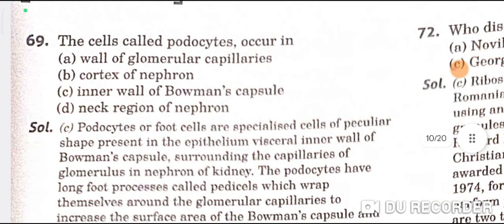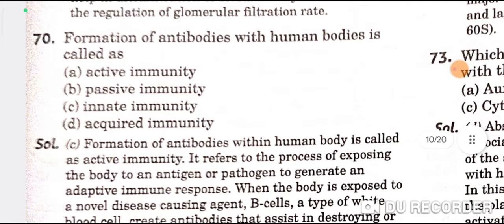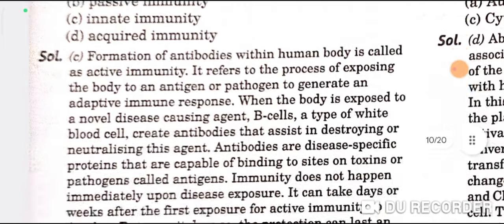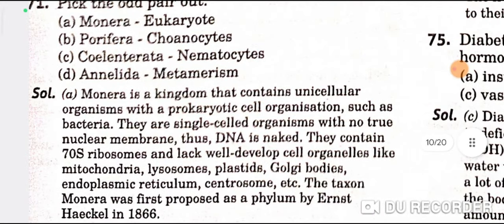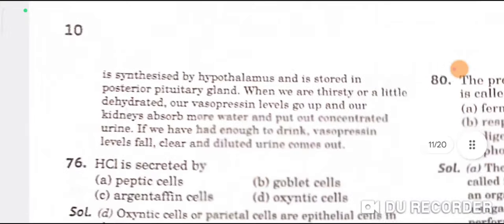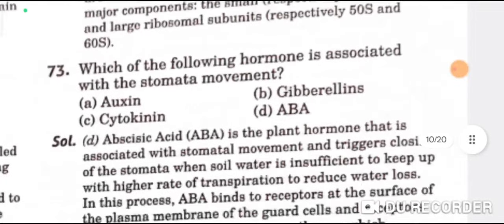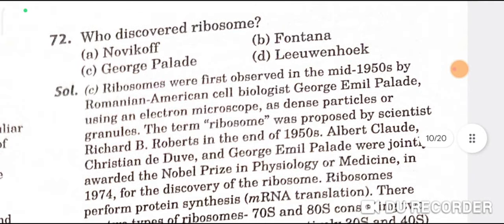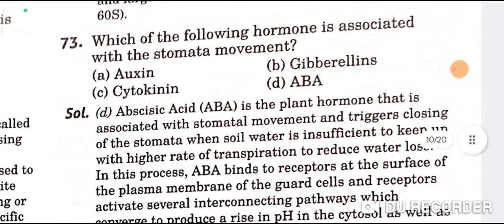The cell called podocyte occurs in the inner wall of Bowman's capsule. The formation of antibodies within the human body is called innate immunity — C is the correct option. The odd pair is Monera-Eukaryote. The discoverer of the ribosome is George Emil Palade — C is the correct option. The hormone associated with stomata movement is abscisic acid — D is the correct option.